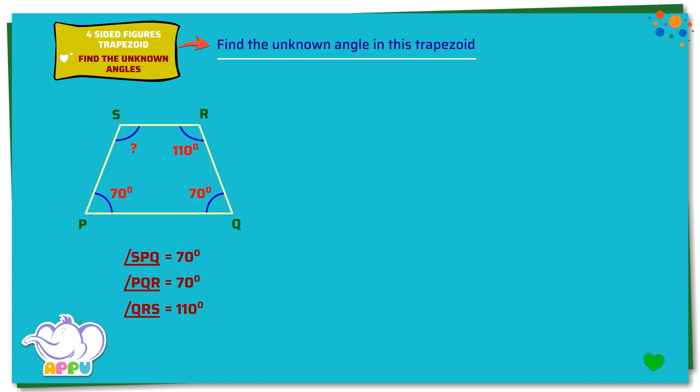Let's find the angle RSP. We know that the sum of all the angles of a trapezoid add up to 360 degrees.